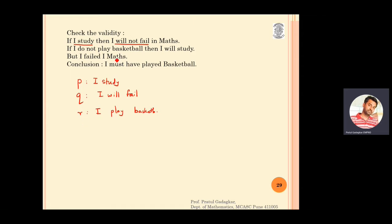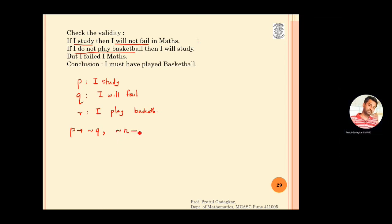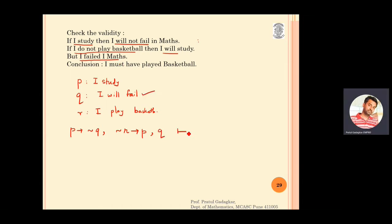Now we write all three premises in logical notation. The first premise 'if I study then I will not fail' is written as p implies negation q. The second premise 'if I do not play basketball then I will study' is negation r implies p. The third premise 'I failed in maths' is simply q, and the conclusion 'I played basketball' is r.